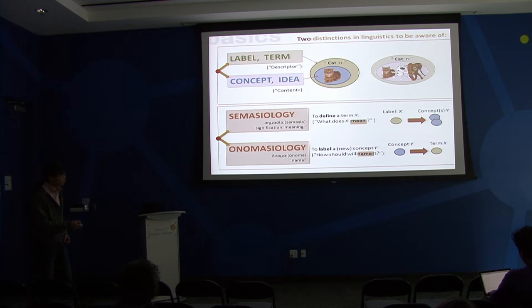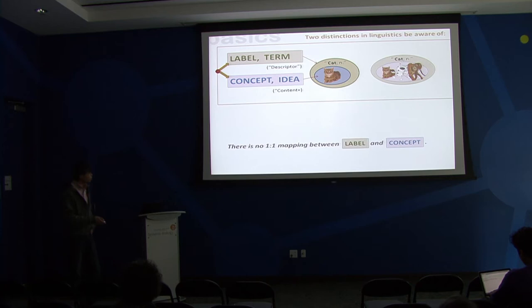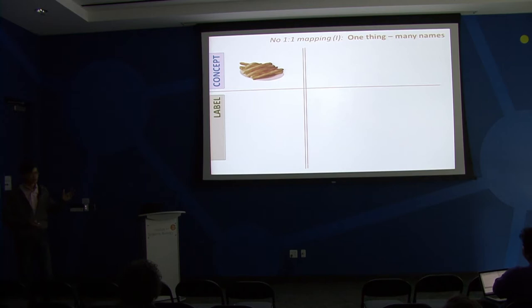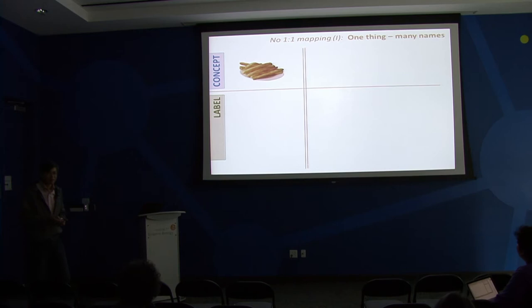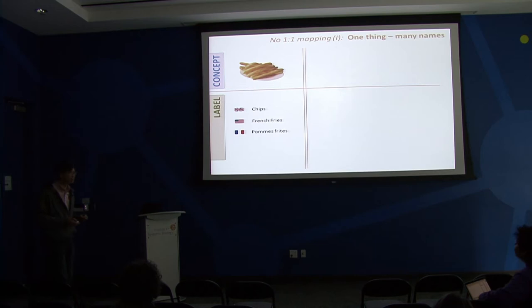You start with a concept and want to find a term for it. So onomasiology is the problem of naming a thing, and that is obviously more important in science because we encounter new concepts that we have to give a label to. There's not always a one-to-one mapping between these two. There are different names for the same concept - like different ways of depicting the same thing - but we know what it means because it's a very concrete object. Here the concept is a natural class, a natural type, but there are more abstract things.